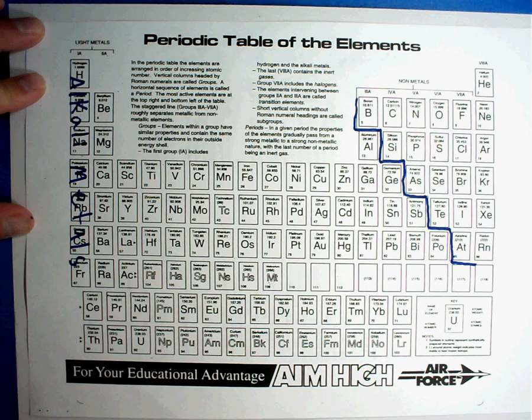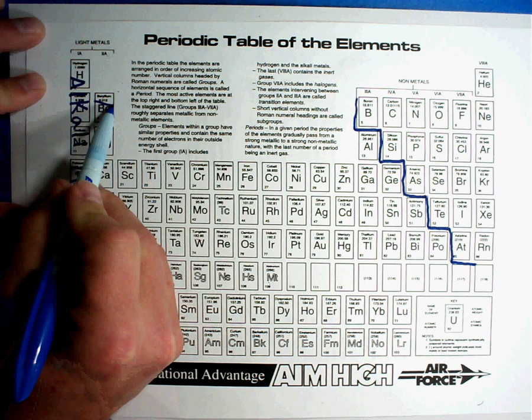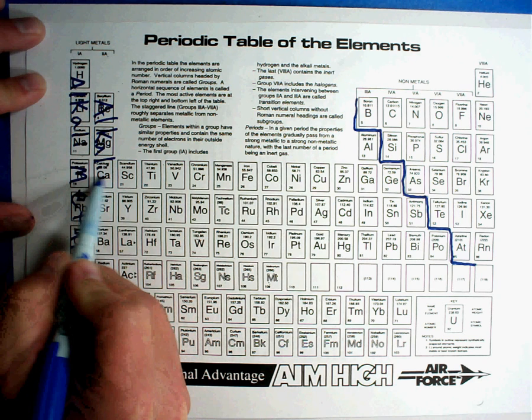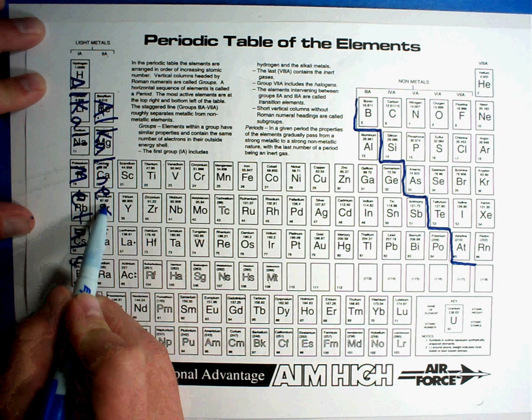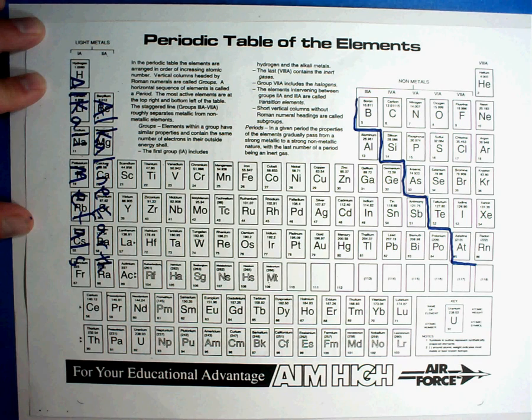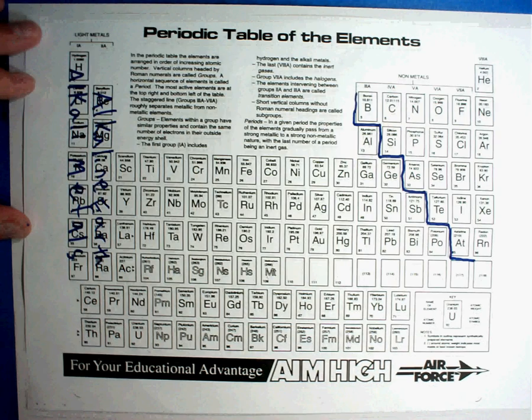Column number two are called the alkaline earth metals. So column number one has a specific name called the alkali metals.